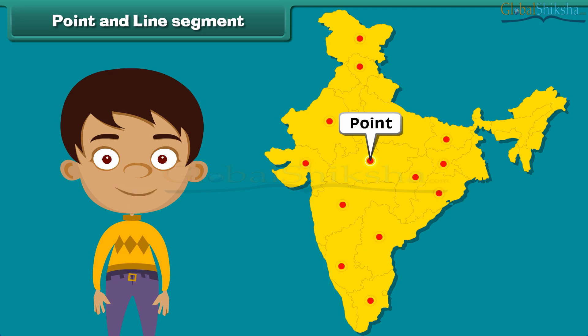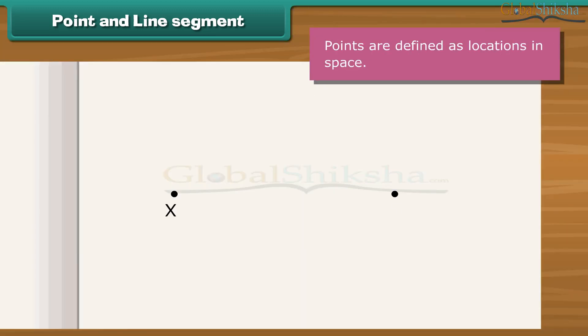In geometry, points are defined as locations in space. They tell about the position of objects. What if two points are connected? We will get a line segment.